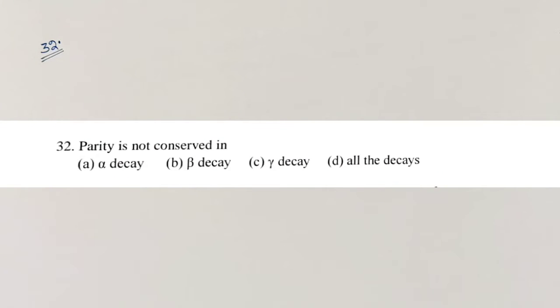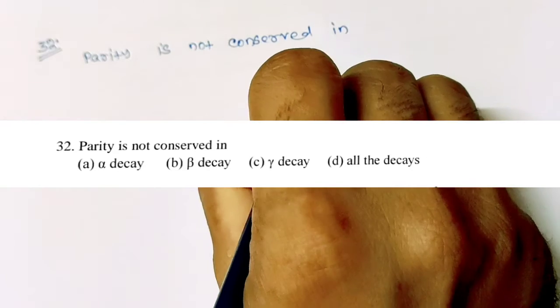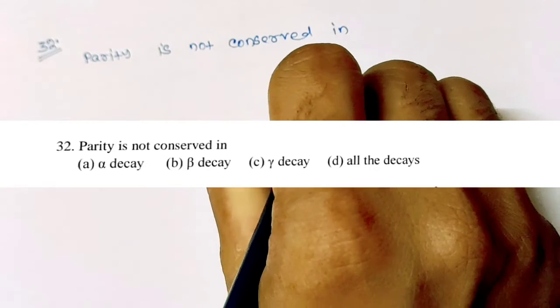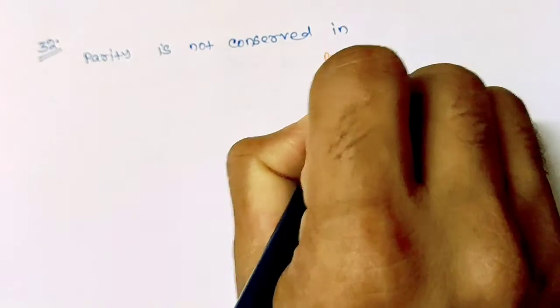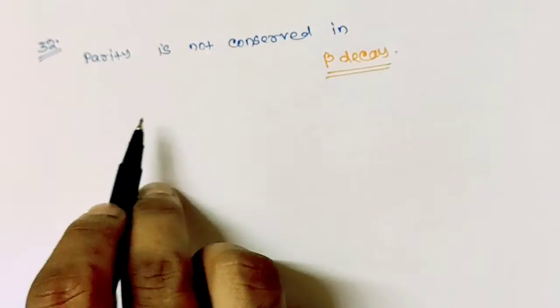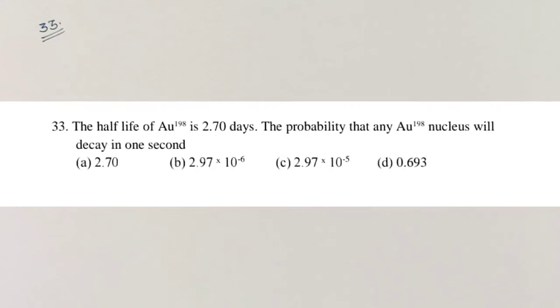Question number 32: Parity is not conserved in beta decay. You should remember that parity is not conserved in weak interactions.